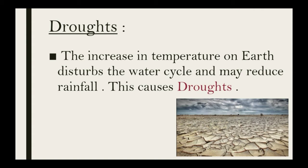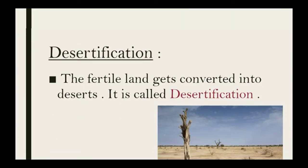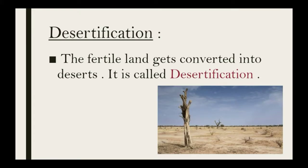Next we look into desertification. Desertification is when fertile land — land with nutrients and humus — gets converted into deserts. This process is called desertification.